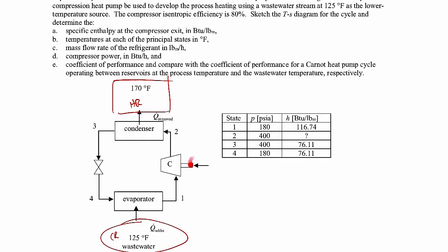We also need to find the compressor power going into the compressor (W dot in), the coefficient of performance for the whole cycle, and compare that with the coefficient of performance for a Carnot heat pump cycle operating between reservoirs at the process temperature and wastewater temperature respectively.